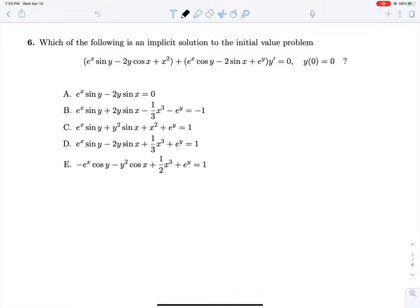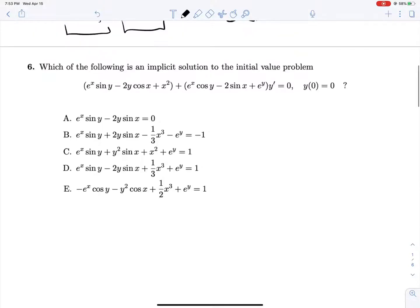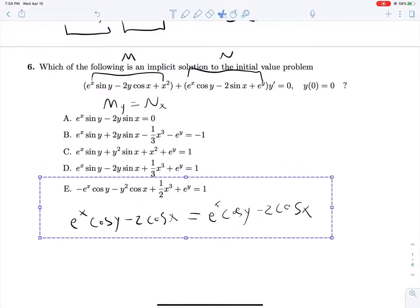Question six, we're looking for another implicit solution to this initial value problem. So it's looking very similar over here in what they're giving us, but we still have to check if M_y is equal to N_x. Okay, so M_y will give us negative e^x cos y. Sorry, this is a partial derivative, not an integral. So cos y minus 2 cos x plus 0, that x squared will go to 0, and we're seeing if that's equal to e^x cos y minus 2 cos x. So this is true.